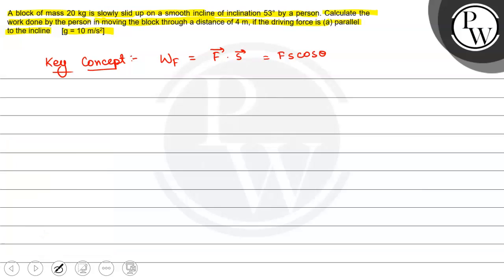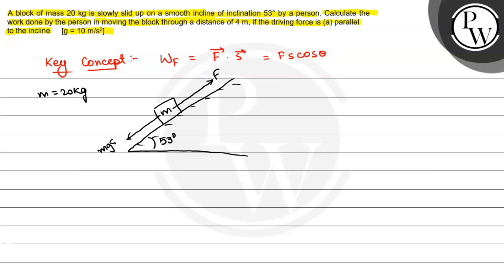Now we will see that in our question diagram this is an incline which is smooth. Okay? Now angle of inclination we have given 53 degree and this is a block which is a mass M, M is 20 kg is given by a force F. This is a force F. That will be equal to M G sin 53.